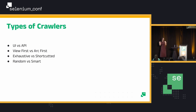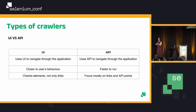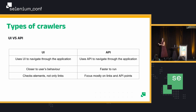These are the sort of crawlers that I — again, this is made up by me — different types of crawlers and applications. UI crawler versus API crawler: the UI will go and use a UI, like any application will do, clicking around your application to go through it. And API is going to use an API, like the name indicates, to navigate through the application. It's generally faster to run if you're using an API.